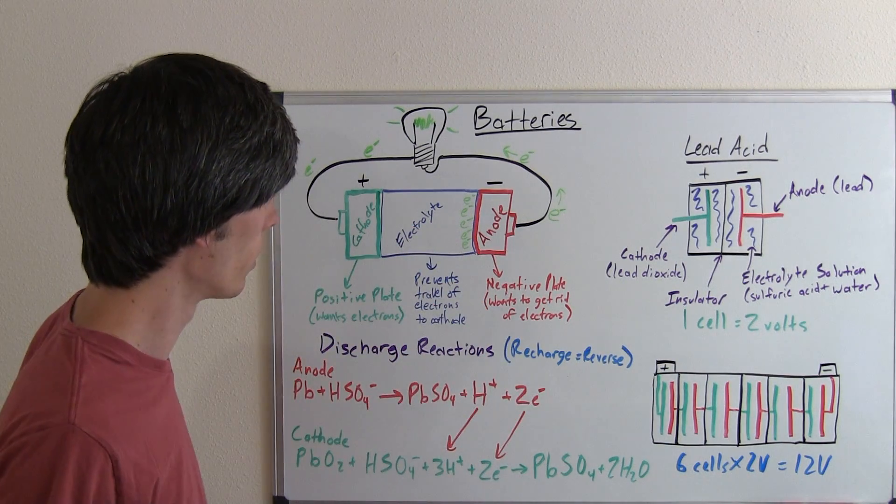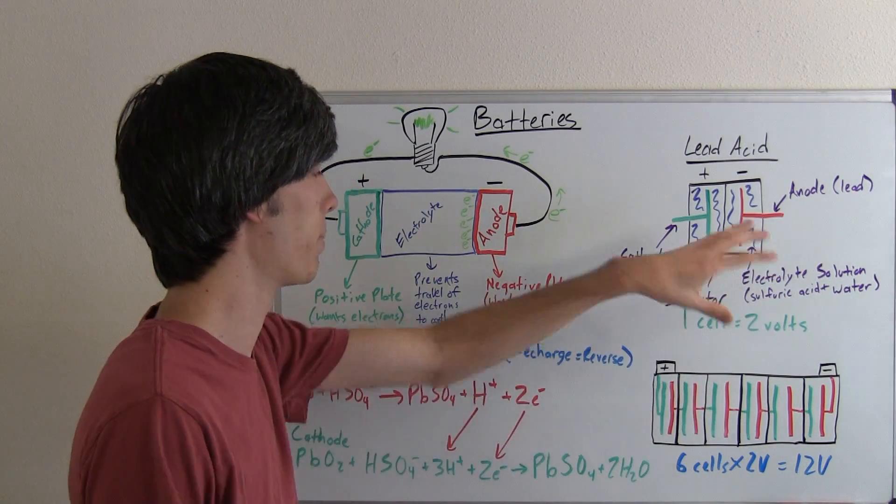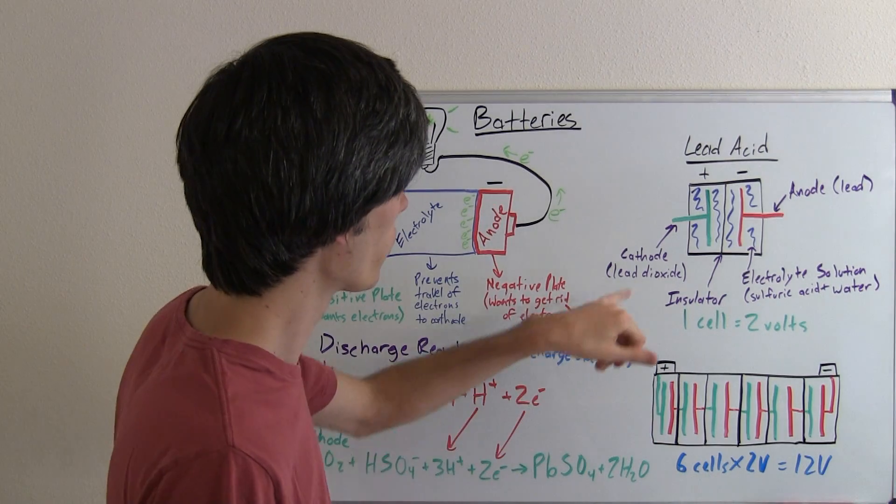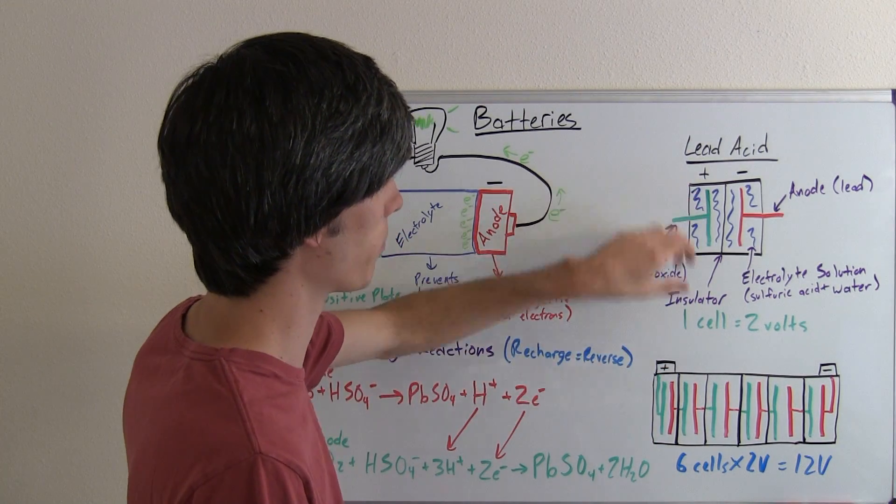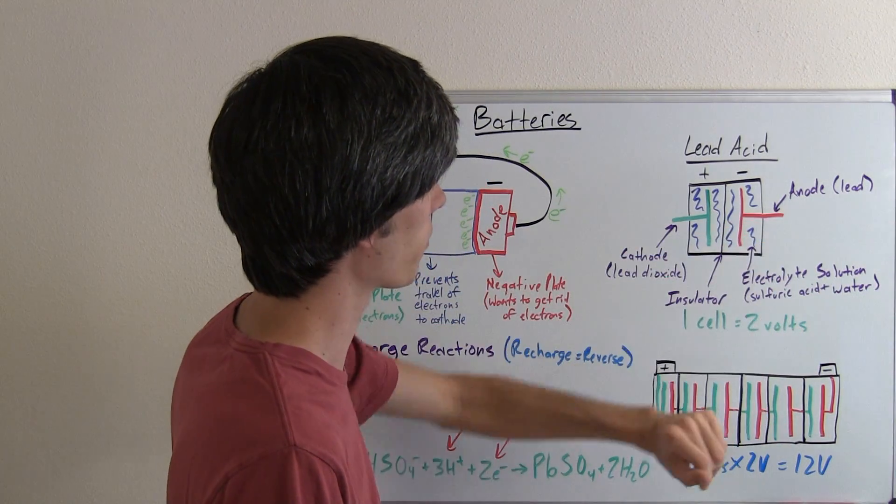So, how does that work? Well, let's take a look at a lead acid battery, a car battery, basic car battery, as our example. So we've got our cathode, which is a lead dioxide, that's the positive plate, and we have our anode, that's just lead, and that's our negative plate.